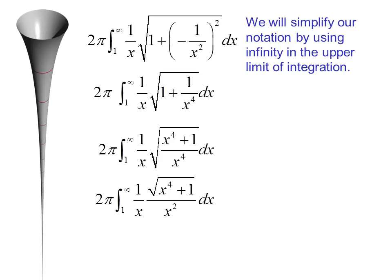Now we can take the x to the fourth out of the radical sign, and we get 2 pi times the integral from 1 to infinity of 1 over x times radical x to the fourth plus 1 over x squared dx. Or 2 pi times the integral from 1 to infinity of radical x to the fourth plus 1 over x cubed dx.